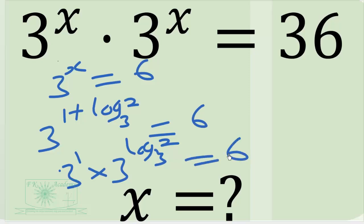Is it giving us 6? So we have 3 exponent 1 is 3 times we have 3 exponent log 3, 2. That will give us 2. So 3 times 2 will give us 6. Thank you for watching.